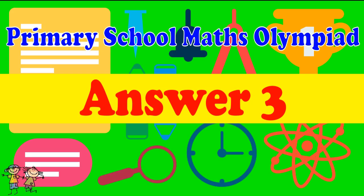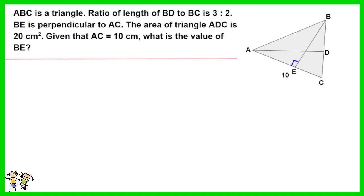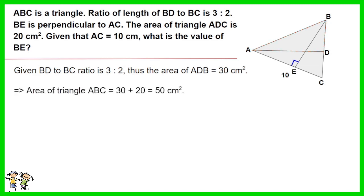Answer for question 3. Here is the recommended answer. Given BD to BC ratio is 3 to 2, thus the area of ADB equals 30 centimeters squared. Area of triangle ABC equals 30 plus 20 equals 50 centimeters squared. Half of AC times BE equals 50 centimeters squared. Thus half times 10 times BE equals 50 centimeters squared. BE is 10 centimeters.